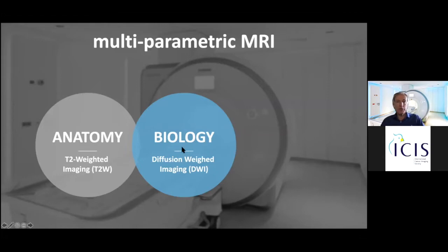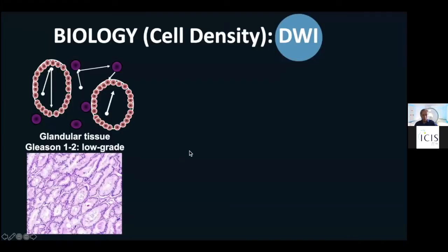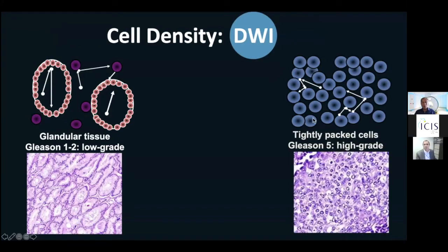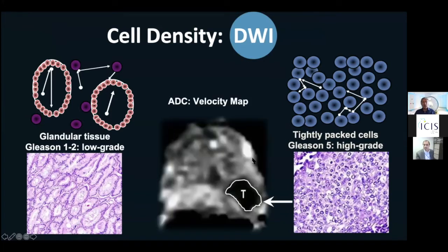We use diffusion-weighted imaging, which shows predominantly biology. DWI shows the velocity of water molecules between the cells. With high velocity, it is bright on the DWI images. If there is a wide area between the cells, there is high velocity. However, when the cells are tightly packed — for example, in an aggressive prostate cancer — the velocity is low. On the ADC map, the apparent diffusion coefficient map, it is black. Black on the ADC map indicates a probably aggressive tumor.